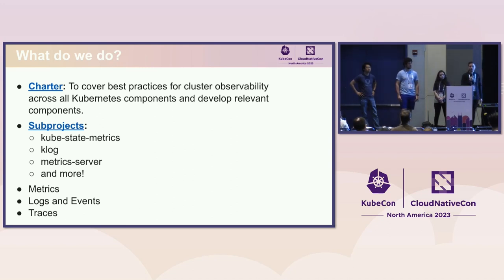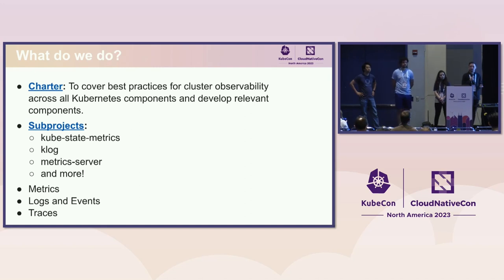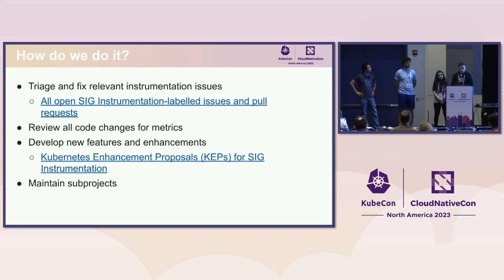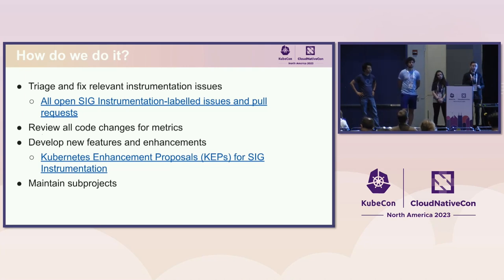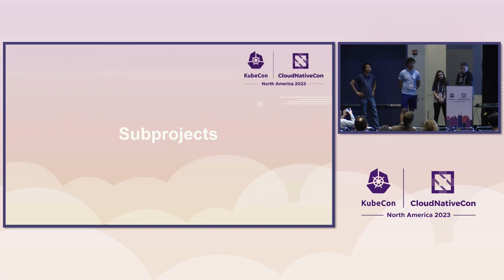For the sub-projects covering those gaps, we have, for example, kube-state-metrics, klog, and metric server, but we have way more. We're also responsible for the signals — metrics, logs, and traces — and we have events in Kubernetes that are similar to logs. We fix issues relevant to instrumentation, review all code changes made to any signaling in Kubernetes, develop new features and enhancements to drive observability further, and maintain all the sub-projects we have.